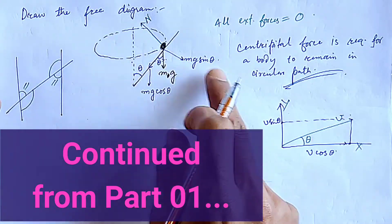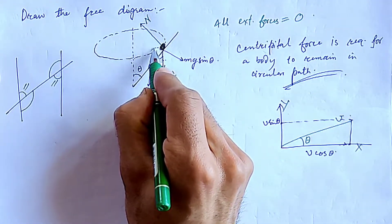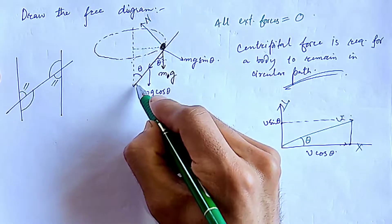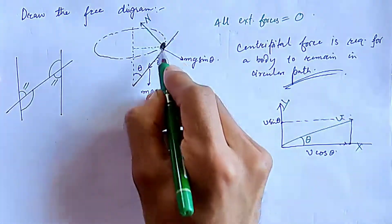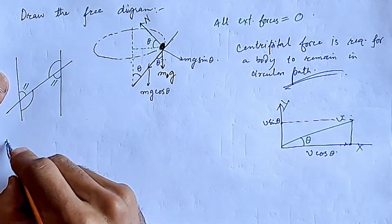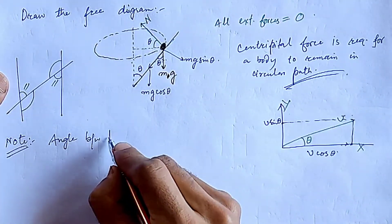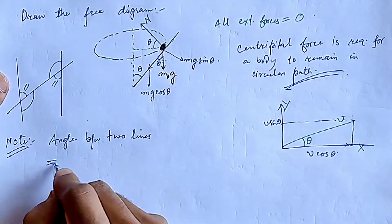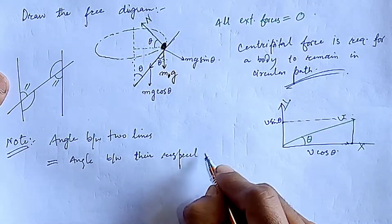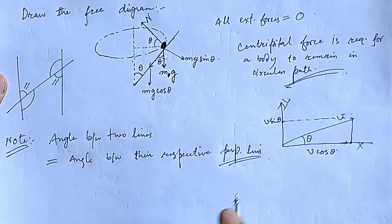Similarly, mg sine of theta is along this axis and mg cosine of theta is along this axis. For N, we draw the perpendicular upon this — the perpendicular on this is this line and the perpendicular on this is this line — so the angle between these two is also the same as theta. This is because the angle between two lines is equal to the angle between their respective perpendicular lines.